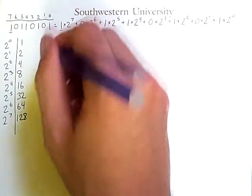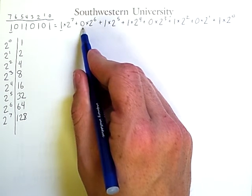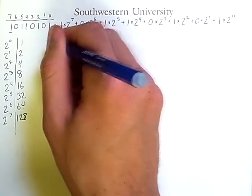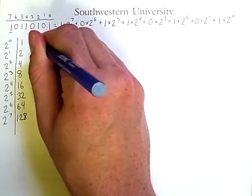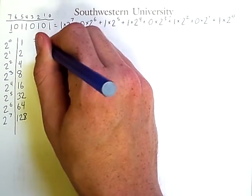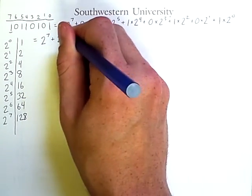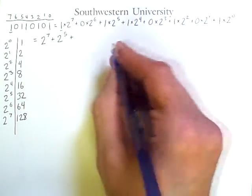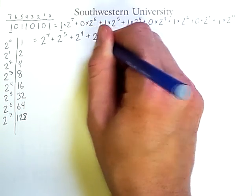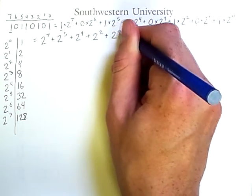Now, it's already obviously very tedious to write out all of these terms that have a 0 in them, and it's clearly unnecessary. So as you get used to these sorts of conversions, you'll probably just skip straight to the next step, which is reducing this to 2 to the 7 plus 2 to the 5th plus 2 to the 4th plus 2 squared plus 2 to the 0.